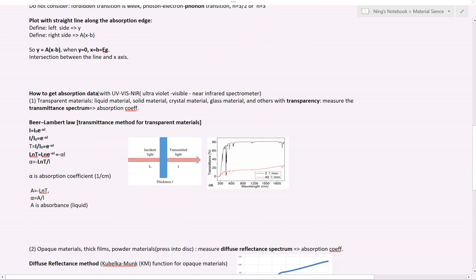First, we need to get the data from an experiment. We should know what machine we should use. The machine is called UV-VIS-NIR, a machine to measure ultraviolet visible near infrared light. We call this machine a spectrometer, and for the transparent material, usually we need to measure the transmittance spectrum. This method is good for liquid material, solid material, crystal material, glass material, or other material with transparency.